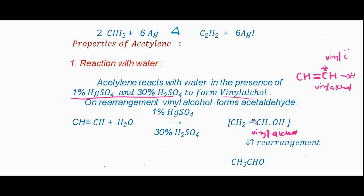After the initial reaction, vinyl alcohol rearranges to produce acetaldehyde as the final product. So when acetylene reacts with water, acetaldehyde is the final product. The carbon which is directly attached to the double bond is called the vinyl carbon, and since OH is attached to the vinyl carbon, the intermediate is called vinyl alcohol.